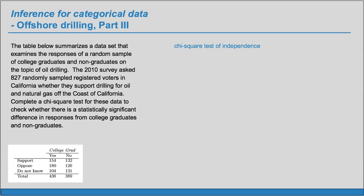Now we can set up our hypotheses. The null claim always says nothing's going on, everything's independent, nothing's related. So H sub 0 always says that the two variables are independent — the response and being a college graduate are independent. And so our H sub A is that response and being a college graduate are dependent.